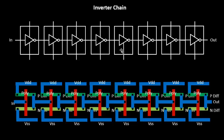What happens when we try to fabricate a chain of inverters? Let's say this is the chain of inverters — this could be the input, this could be the output, or this could also be a part of your data path. For example, there could be a flip flop sitting over here, and this could be a part of your data path or a part of your clock path. This could be the clock port and this could be the D flip flop pin or whatever. This can be a part of any of your circuit, and this is how it looks when fabricated.